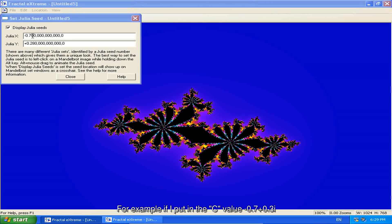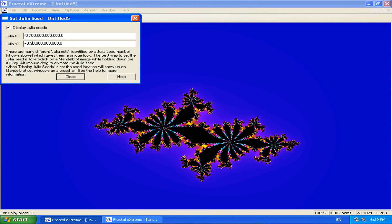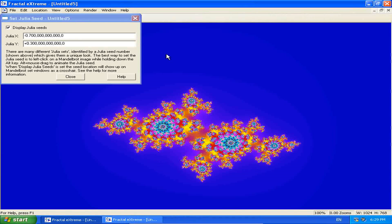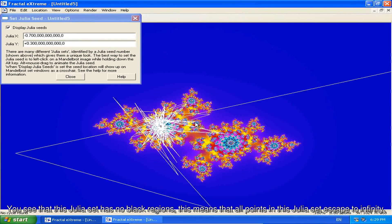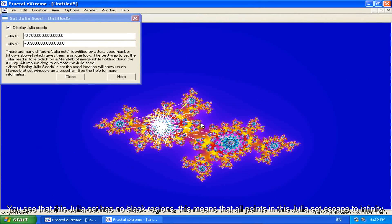For example, if I put in the c value minus 0.7 plus 0.3i, you see that the Julia set has no black regions. This means that all points in this Julia set escape to infinity.